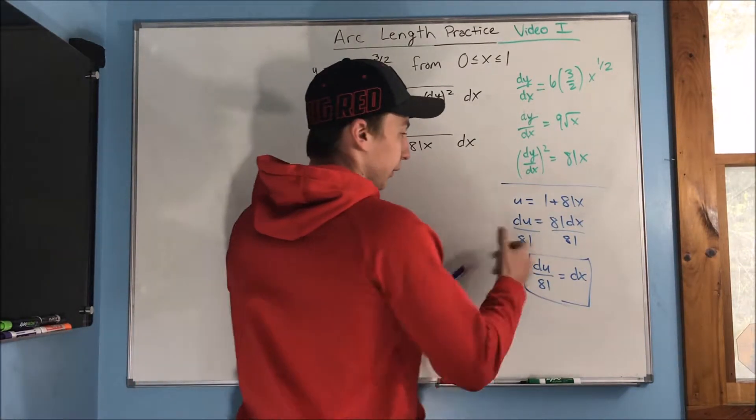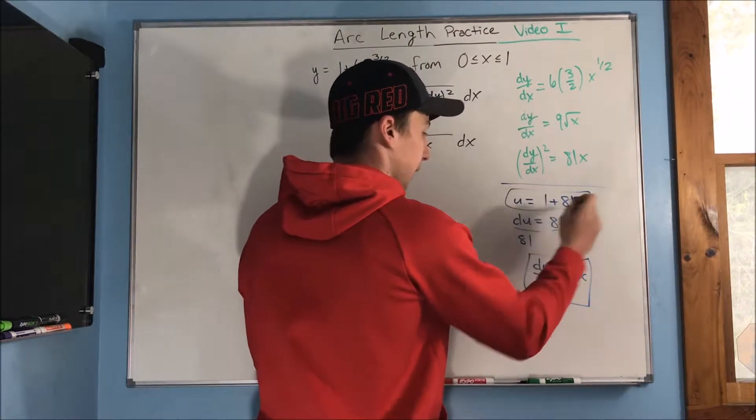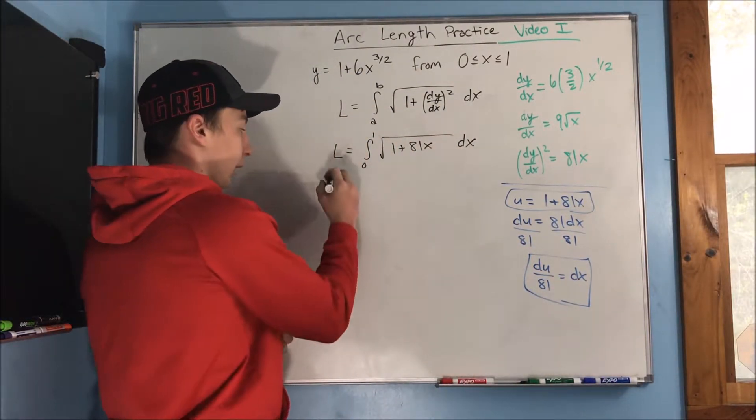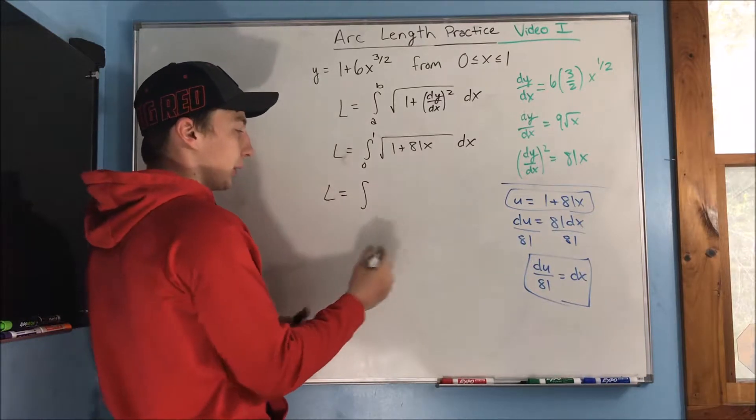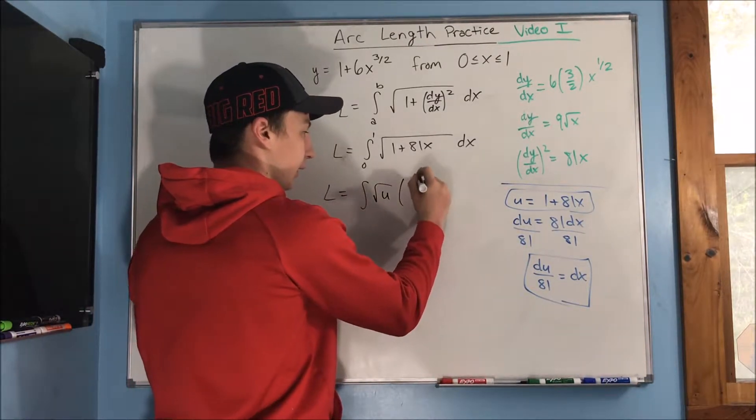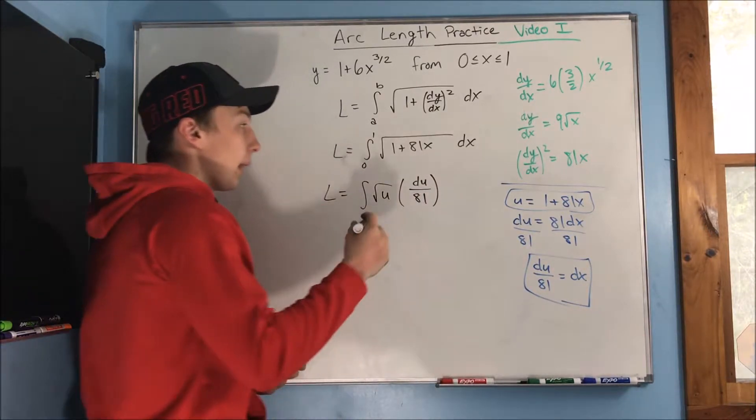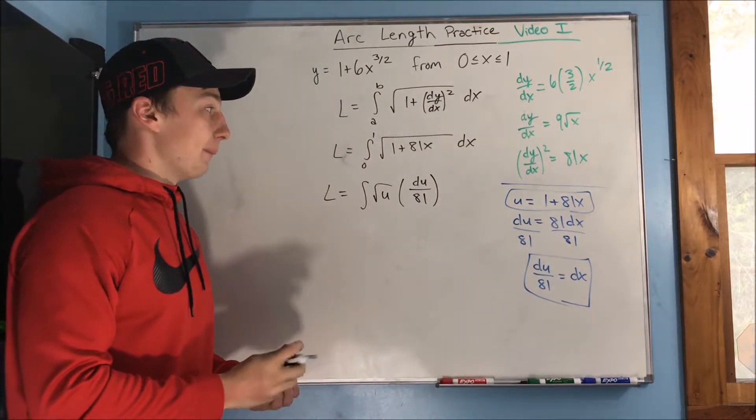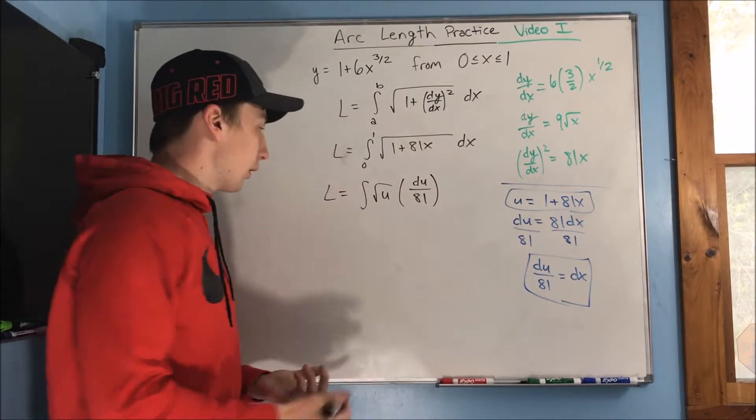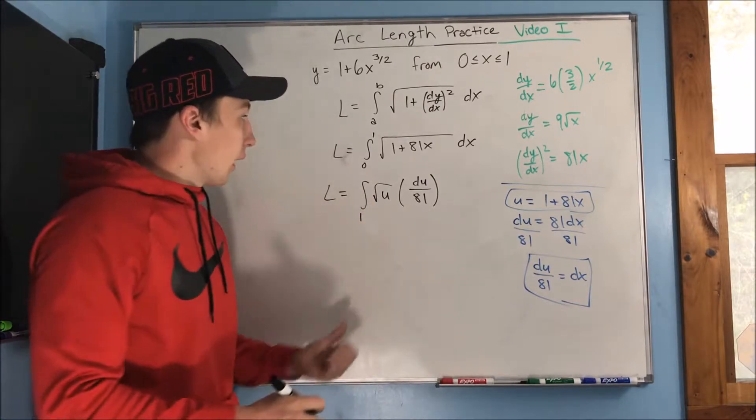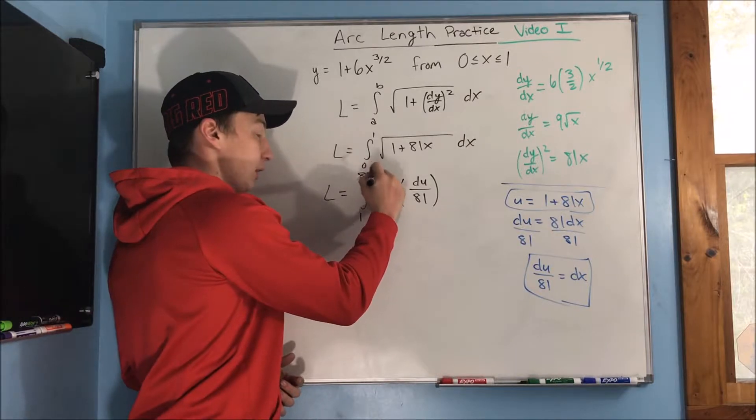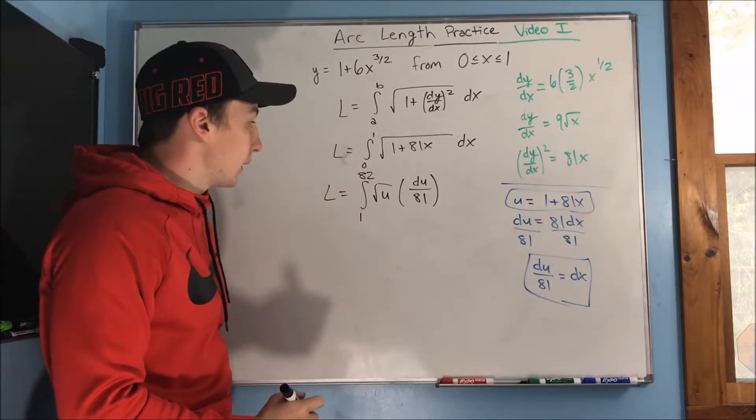And of course, we're going to be also using this substitution. So we can make our substitutions now, and we're going to have to change our bounds. We're going to get rad u times du over 81. What are our bounds going to be? Well, if u equals 1 plus 81x, we plug in 0, we're just going to get 1. And if we plug in 1, we get 1 plus 81, which is 82. So we got the integral from 1 to 82 of rad u times du over 81.